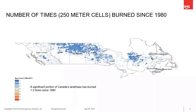Looking back at fire activity in Canada over the past 40 years or so, a substantial amount of land mass in Canada has burned at least one time. Canada has a high incidence and high frequency of wildfire activity. And as long as there's growing exposure at risk and this continued high frequency of fire, wildfire risk is something that Canadians will need to contend with for the foreseeable future.